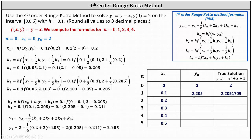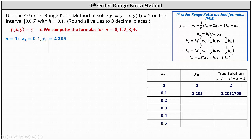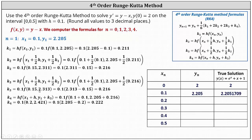Now we want to determine y sub 2. To determine y sub 2, we use n equals 1, and we use our previous calculation that x sub 1 equals 0.1 and y sub 1 equals 2.205. We begin by determining k sub 1 through k sub 4. We have k sub 1 equals 0.211, k sub 2 equals 0.216, k sub 3 equals 0.216, and k sub 4 equals 0.222.